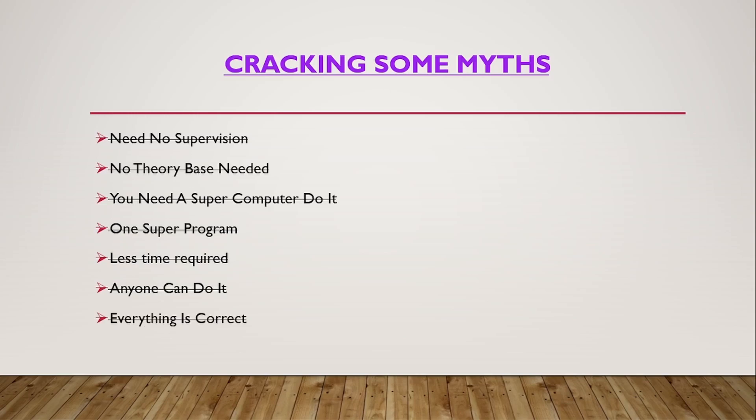Computational chemistry requires a lot of time and effort in studying it. The last myth: everything is correct. That's wrong — everything you obtain in computational chemistry as a result is not necessarily correct. It may not be correct, and whatever the system says is correct doesn't mean it actually is correct. There may be exceptions, and we have to verify results.